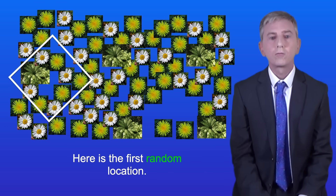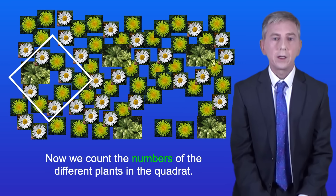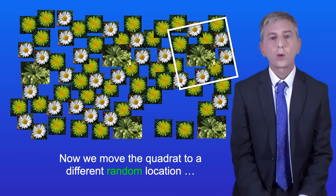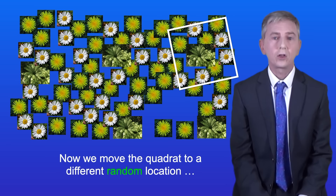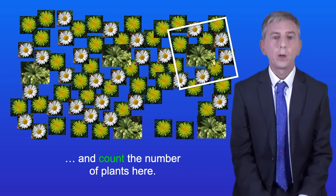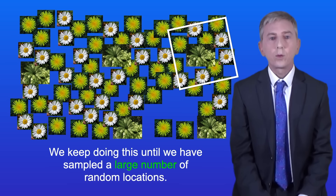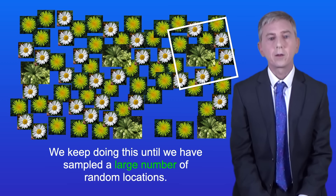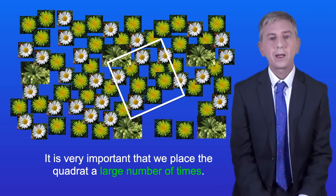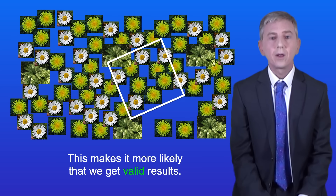Here's the first random location — now we count the numbers of the different plants in the quadrat. Then we move the quadrat to a different random location and count the number of plants there. We keep doing this until we've sampled a large number of random locations. It's very important that we place the quadrat a large number of times, as this makes it more likely that we get valid results.